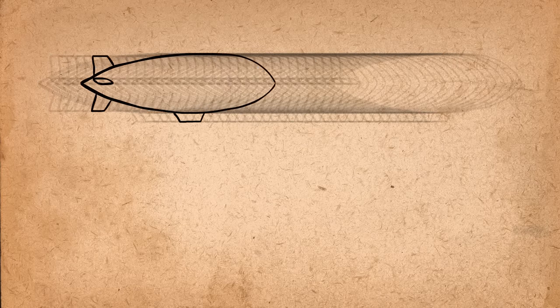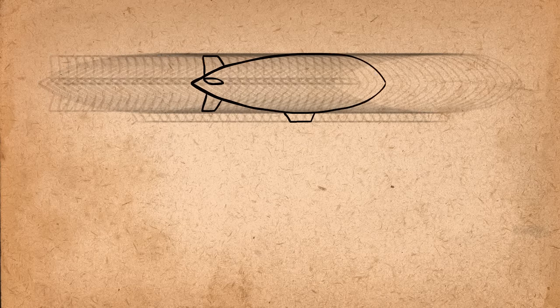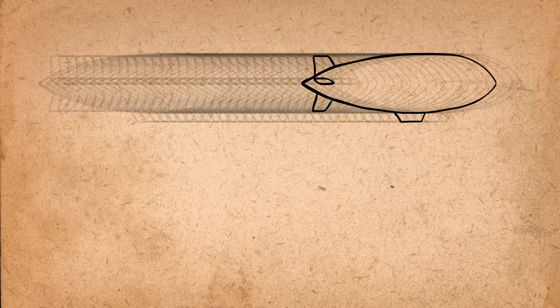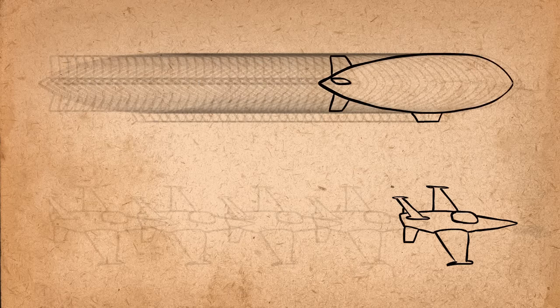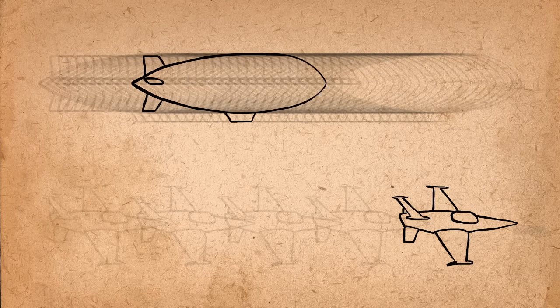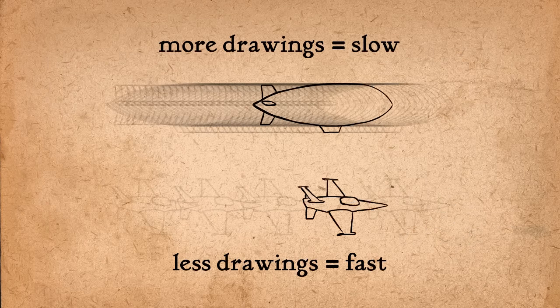Basically, if you have many drawings that are very close together in between the two main poses, the action will be very slow. If you have very few drawings set far apart from each other, the action will be very fast. Less drawings means fast, more drawings means slow.